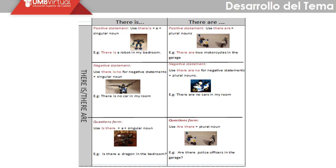Let's see the detailed table: 'There is a robot in my bedroom.' 'There are two motorcycles in the garage.' 'There is no car in my room.' 'There are no cars in my room.' 'Is there a dragon in the bedroom?' 'Are there police officers in the garage?' For questions, we invert the structure: 'is there' or 'are there' depending on whether the noun is singular or plural.